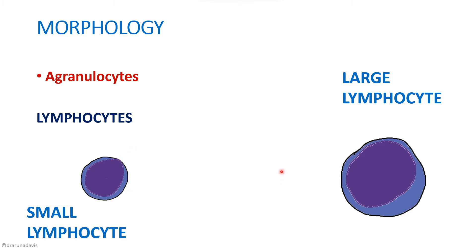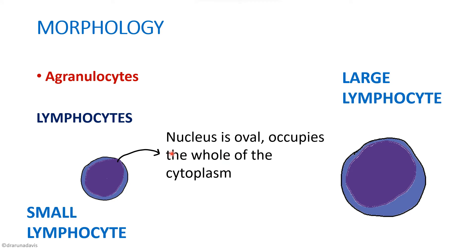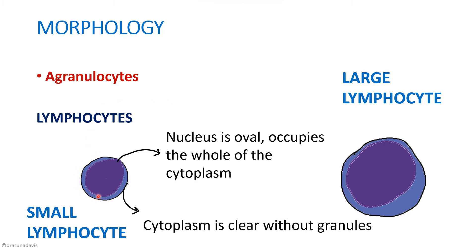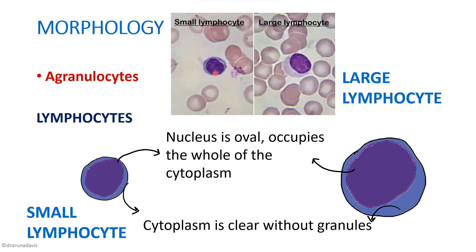There are two types of lymphocytes: small lymphocytes and large lymphocytes. Small lymphocytes have an oval nucleus occupying almost the whole of the cytoplasm, with just a thin clear rim of cytoplasm and no granules. Large lymphocytes also have an oval nucleus but with slightly more cytoplasm. An important question: it is the small lymphocyte that is more mature. In the smear, the small lymphocyte has a size comparable to that of the RBC.